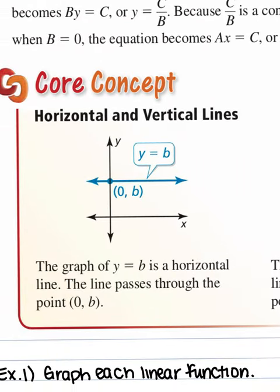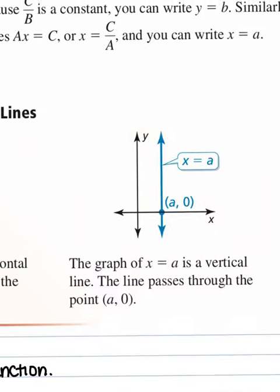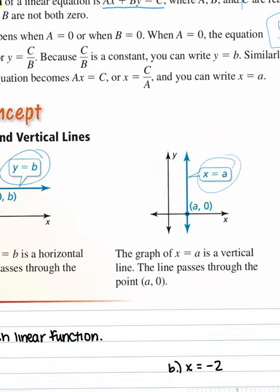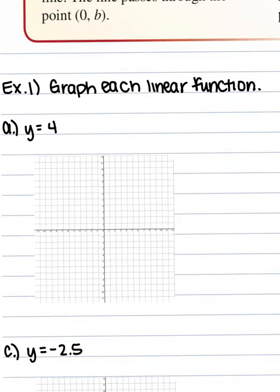Before we dive into standard form, let's touch on horizontal versus vertical lines. A horizontal line happens when y is equal to some number b — all y values equal that fixed value and x can be anything. A vertical line happens when x is equal to some number — x is fixed and y can be whatever it wants.